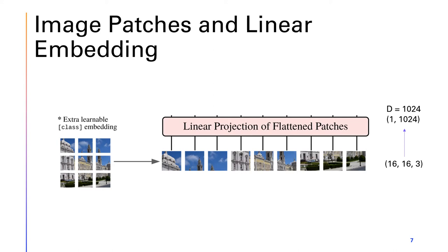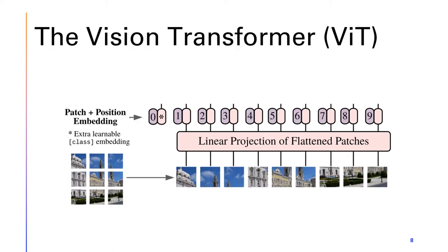In this example, the original patch contained 16 pixels by 16 pixels by 3 channels of data — effectively 768 values. This is linearly projected and flattened into a one-dimensional token that contains 1024 values. Next, positional embeddings are added to each token. These positional embeddings are one-dimensional and learnable. An additional fake patch, the class token, is included in the input sequence, and the output of the class token from the transformer encoder is what will be used as the image representation.